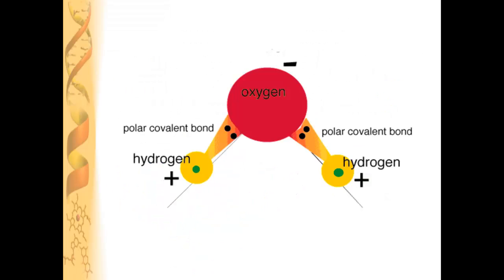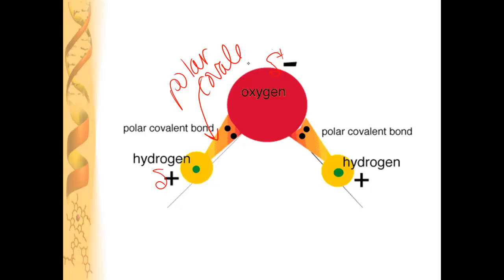So if you look at this diagram of water, the bond formed between this slightly positive hydrogen and the oxygen is called a polar covalent bond — polar because the electrons are shared unequally, and covalent because the electrons are being shared. And the bond on this other side between the hydrogen and oxygen is also called a polar covalent bond.